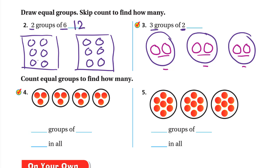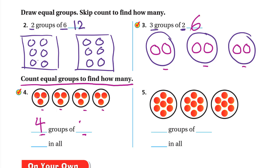Count equal groups to find how many. We have four groups, and each group has three. So that's four groups of three. Skip counting by threes: three, six, nine, twelve. The total is twelve.